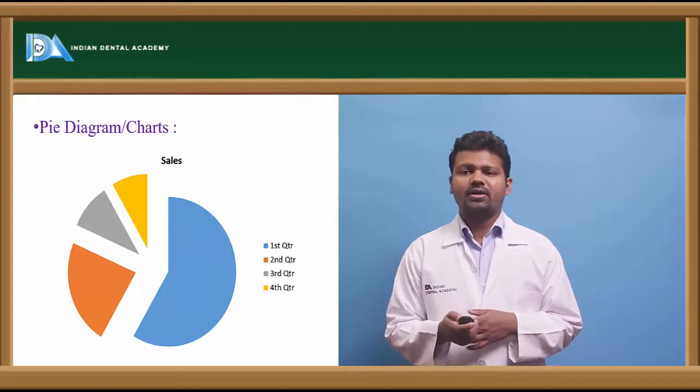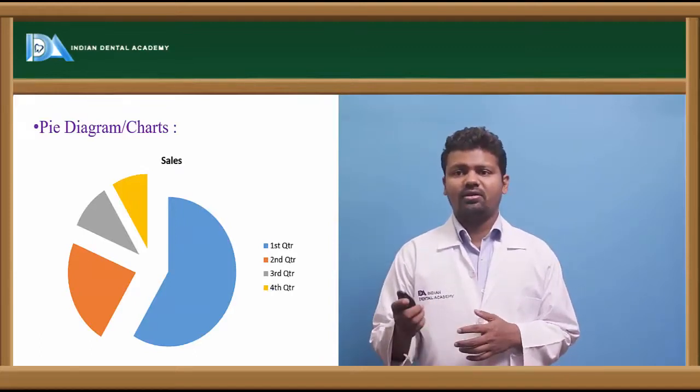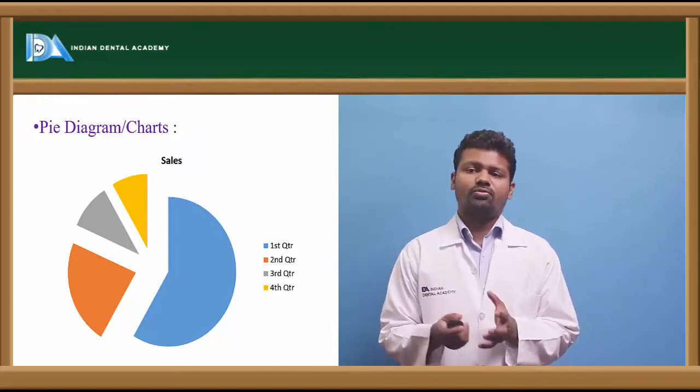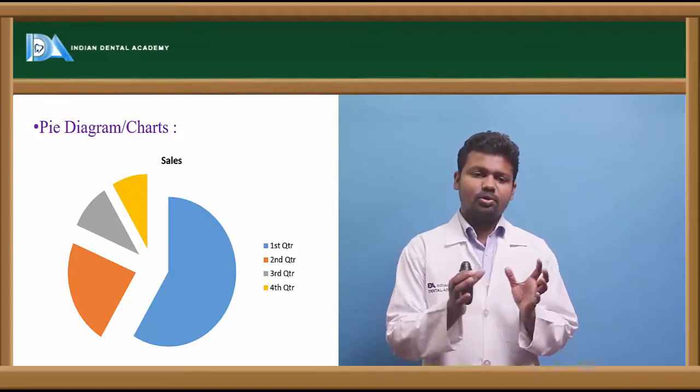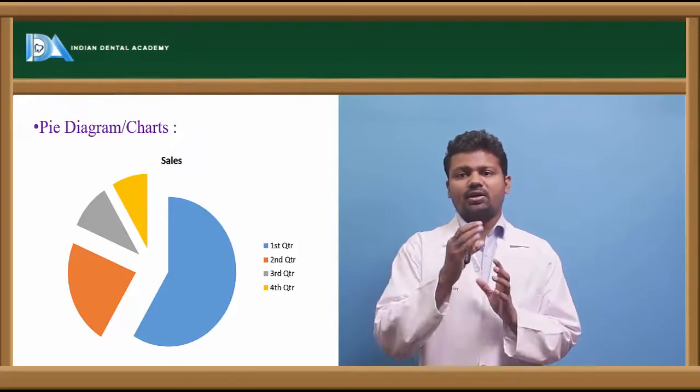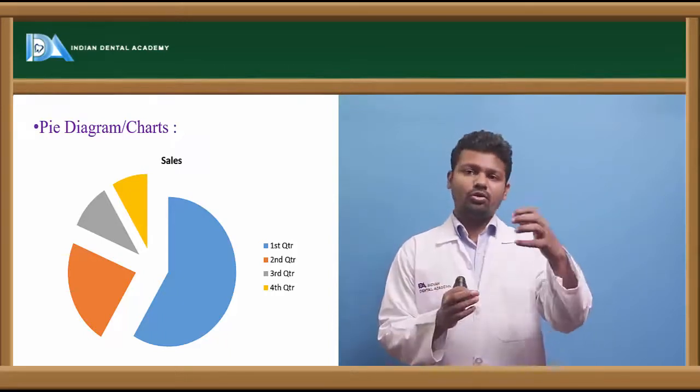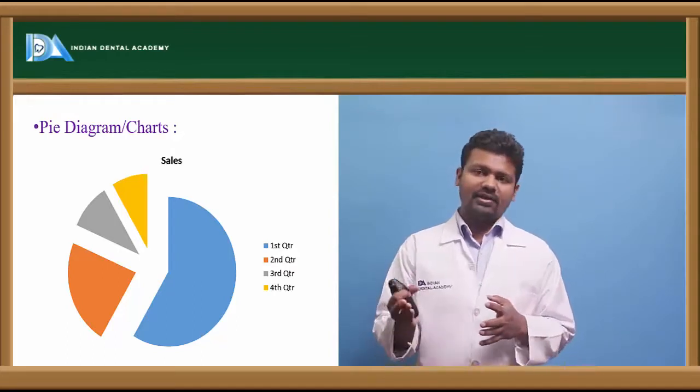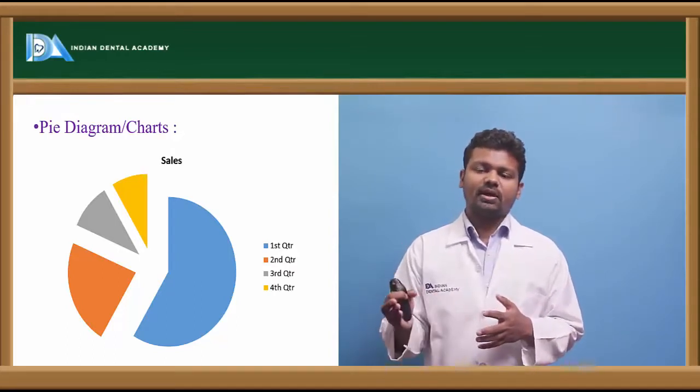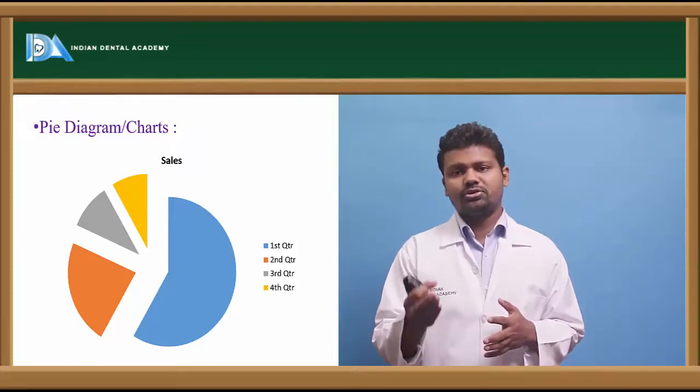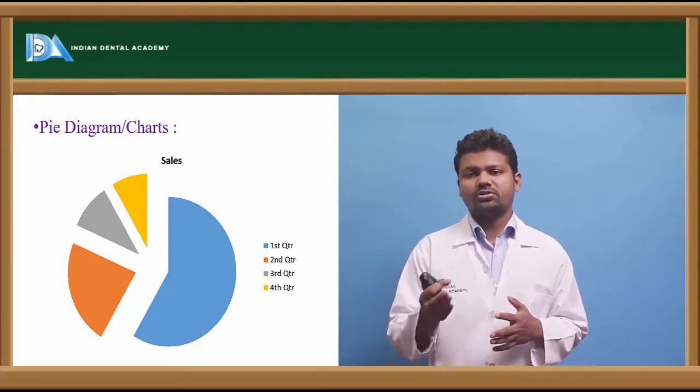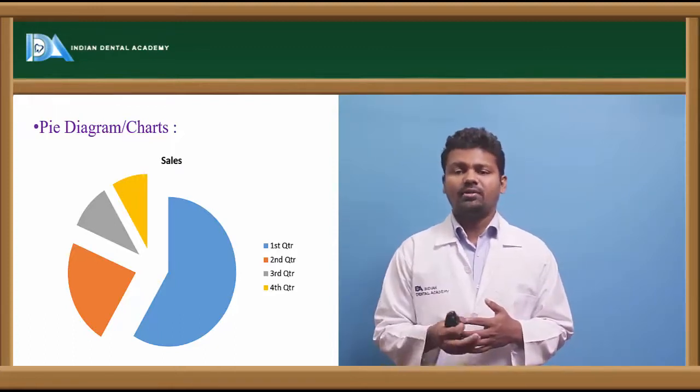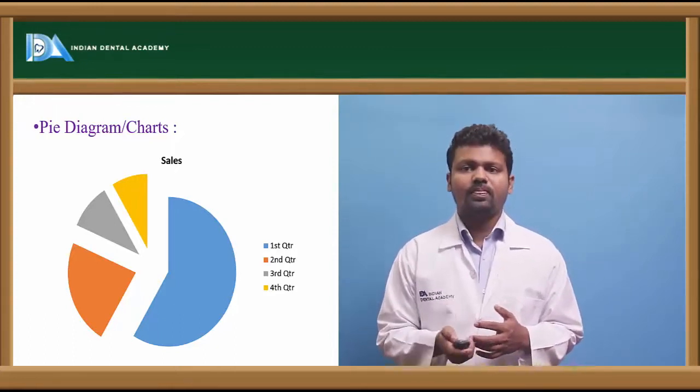The pie diagram symbolizes a pie with cut pieces. For example, if the population is 100, you can divide it into sections. In yellow, you can show 25 dental caries cases; in another section, 20 cases of gingivitis; in orange, 30 or 40 cases of periodontitis; and the remaining shows normal cases.